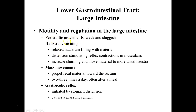The large intestines don't really use peristaltic movement to push materials from one end to the other. Instead, they use haustral churning, where each section known as a haustra fills with materials and then moves them back and forth before gradually advancing further along. Mass movements then move material very quickly toward the rectum, and this can happen anywhere from one to four times daily depending on the types and amount of food you eat.